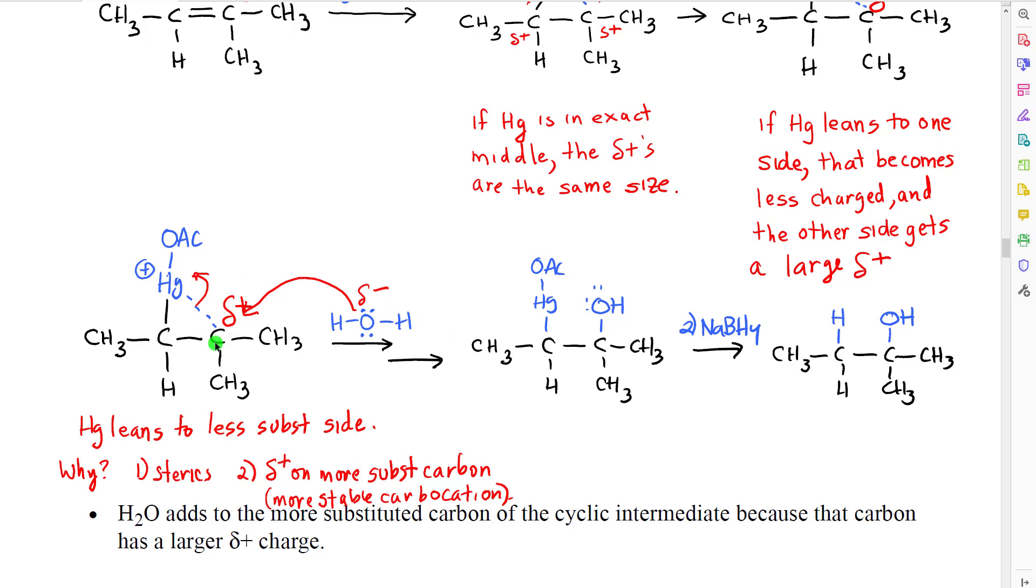Once that water molecule has attached on the more substituted side, and then becomes deprotonated, we get this intermediate. And what we see is, in the second step, where we replace the mercury with the hydrogen, the hydrogen will specifically go on whichever atom the mercury is attached. In this case, the mercury will become attached to the less substituted carbon, so the hydrogen will go on the less substituted carbon. This is Markovnikov's rule. So this molecule follows Markovnikov regioselectivity.